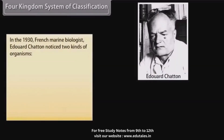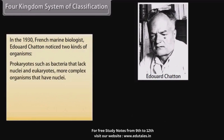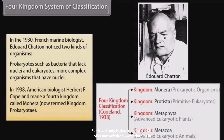In the 4 Kingdom System of Classification, in the 1930s French marine biologist Edward Chatton noticed two kinds of organisms: prokaryotes, such as bacteria, that lack nuclei, and eukaryotes, more complex organisms that have nuclei. In 1938, American biologist Herbert F. Copeland made a fourth kingdom called Monera, now termed Kingdom Prokaryote.